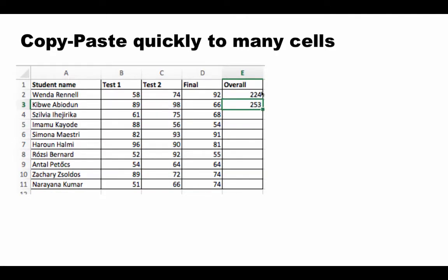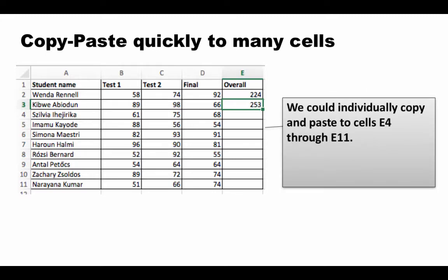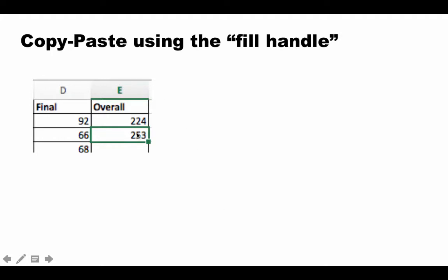We need to copy the formula not just to one cell (E3) but to all the remaining cells. If there are hundreds of students, even the copy-paste operation becomes tedious. But Excel provides a nice way to quickly copy to many cells—when a cell is selected, you'll see a small rectangle at the bottom right called the fill handle.